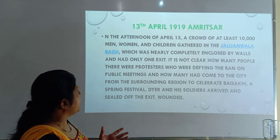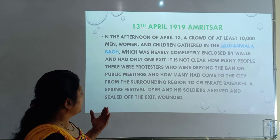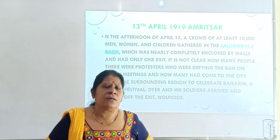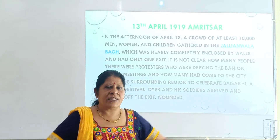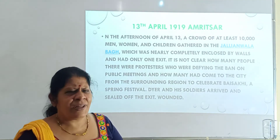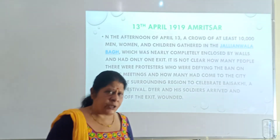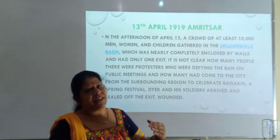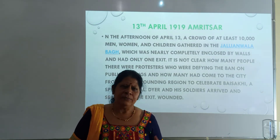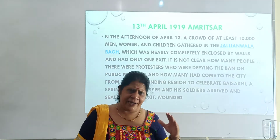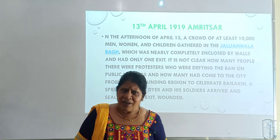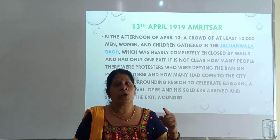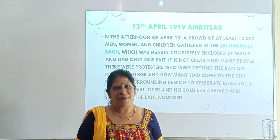In the afternoon of April 13th, a crowd of at least 10,000 men, women, and children gathered in Jallianwala Bagh, which was nearly completely enclosed by walls — one entry, one exit — and soldiers encircled them. General Dyer gave the order to shoot. The person who gave the order was an Englishman, but the people who were shooting were all Indians. Didn't they have any mercy? If we blame Dyer, we should also blame those Indians — why didn't they say no to General Dyer's instruction?